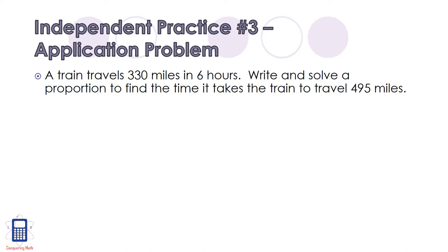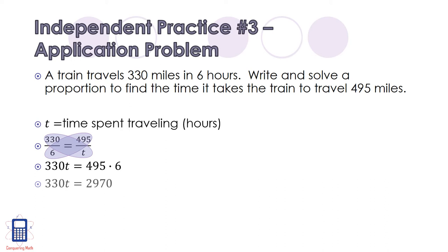So there are several different ways to set up this proportion. Let's start by defining our variable. t equals the time spent traveling in hours. And depending on how you set it up would change the method you used. I decided to set it up as 330 miles over 6 hours equals 495 miles over t hours. So I will use cross multiplication this time. And I have 330t equals 495 times 6, which simplifies to 2970. I need to get t by itself, so I'll divide by 330 on both sides. And I'll find that t equals 9. The train travels 495 miles in 9 hours.